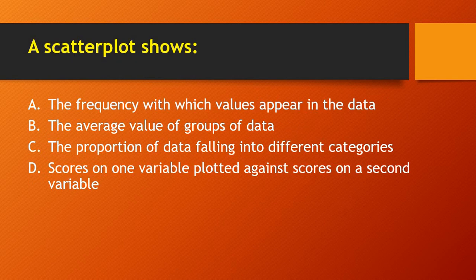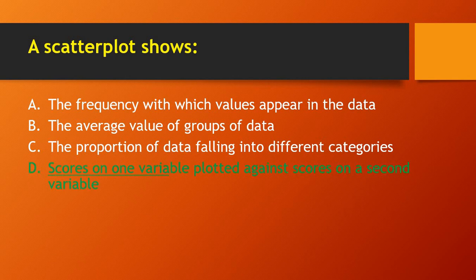Next question: a scatter plot shows — (a) the frequency with which values appear in the data, (b) the average value of groups, (c) the proportion of data falling into different categories, or (d) scores on one variable plotted against scores on a second variable? The right answer is option D.